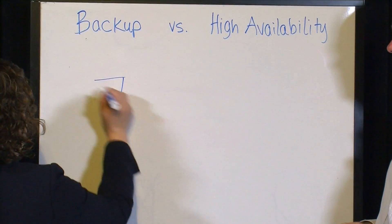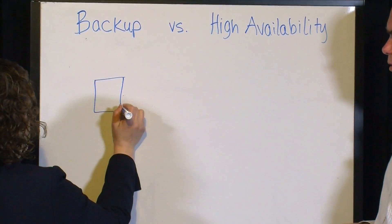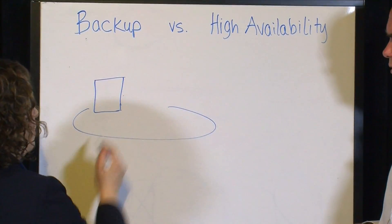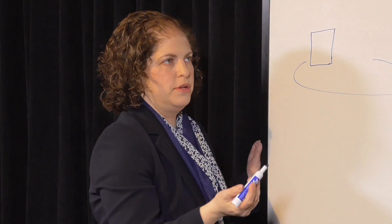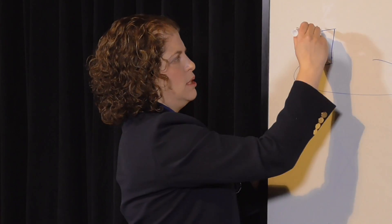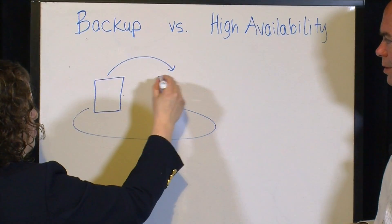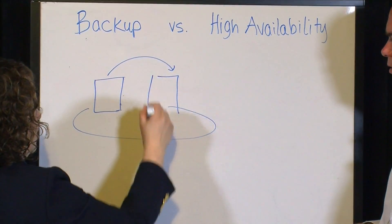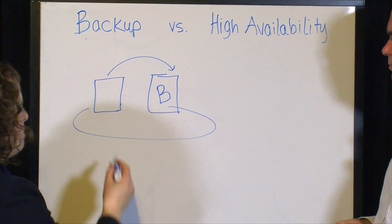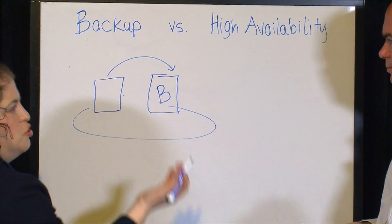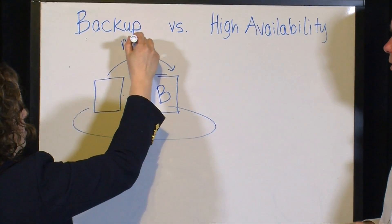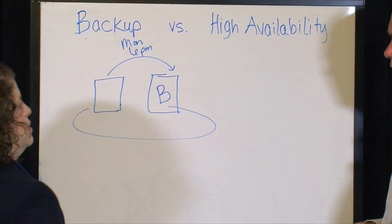Let's say you have a server in your data center. Usually, people take a backup of those servers typically once a day. They're using some sort of snapshot technology to create a copy of that server, often on-premise — we'll call that the backup copy. That happens usually after close of business, so let's say 6 p.m. — for the exercise, let's call it Monday at 6 p.m.